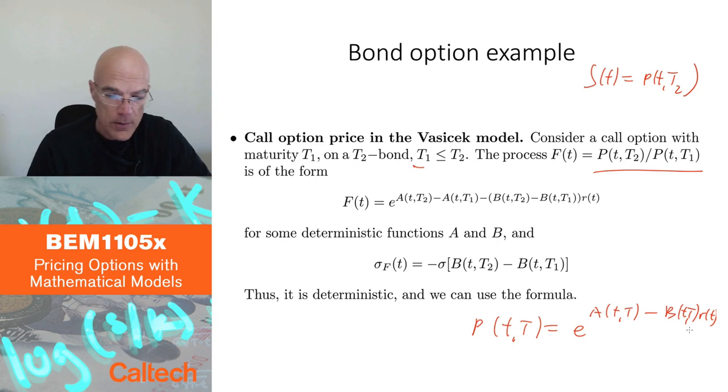Therefore, it's easy to compute this ratio here. The ratio is then just the ratio of exponentials, which means everything gets into the exponent of one exponential. The one in the denominator comes with a minus sign. So I'm going to get this. If I just do the ratio of these two guys for T2 and T1, I'm going to get this.